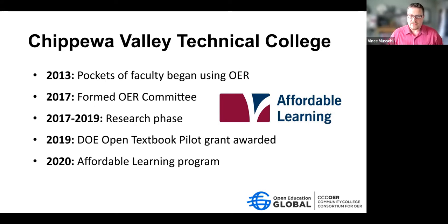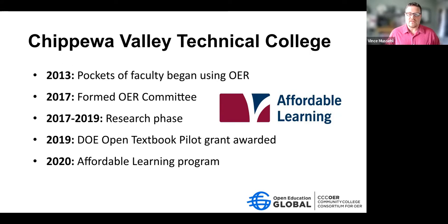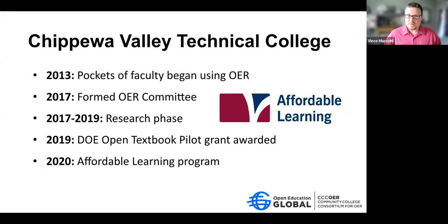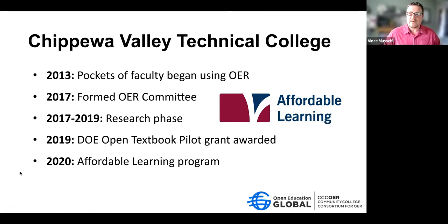Our OER program started in 2013 with pockets of faculty beginning to use OER. Between 2013 and 2017, we saw more requests and OER becoming more popular, so we needed to figure out how to support our faculty. In 2017 we formed our OER steering committee — a cross-functional team with reps from all throughout the college. From 2017 to 2019 we were in a research exploratory phase, figuring out what this all entails. Those two years of research put us in a really good position to apply for the Department of Education textbook grant, which we were eventually awarded. That bumped things up a notch — faculty and the community became more interested in OER in general.